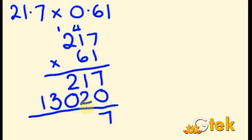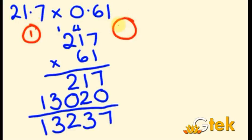So totally 7, 3, 2, 3, 1. So that is 13,237 we have obtained. Now we have to add the decimal number. So it is one digit after the decimal and two digits after the decimal. So totally it is 3. So we have to give the decimal point before three digits.